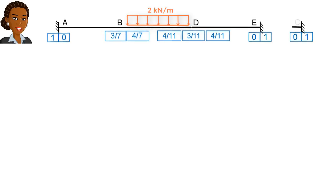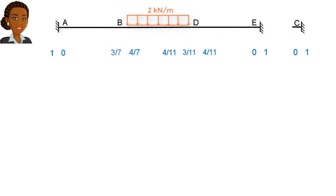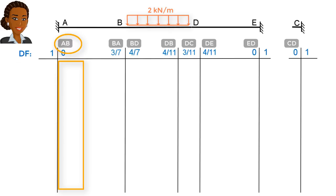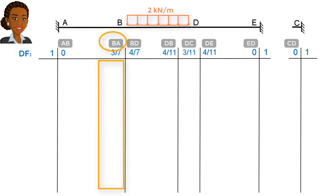Then, the distribution factors are placed like this. To add clarity to the table, let's label its columns. I am going to label this column AB. This means the column contains bending moment values for the lower end of member AB. And this column, I label BA. It is for bending moment values at the upper end of member AB.